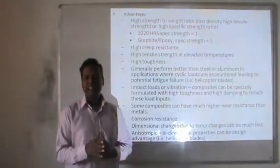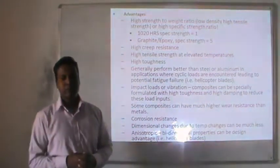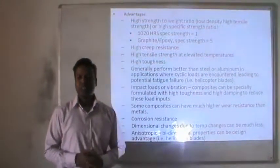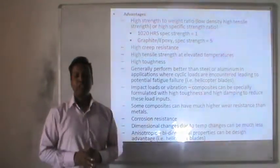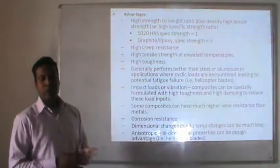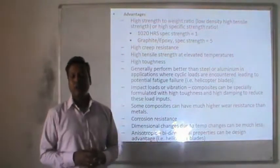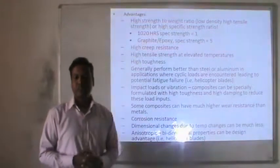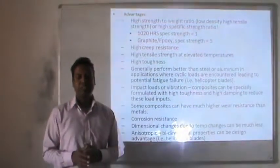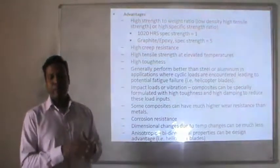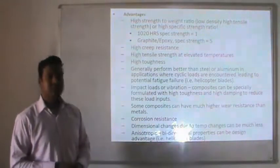Composites generally perform better than steel or aluminum in applications where cyclic loads are encountered, leading to potential fatigue failures. For example, in helicopter blades subjected to impact loads and vibrations, composites can be specially designed with high toughness and high damping to reduce load inputs. Some composites also have much higher corrosion resistance than metals. Dimensional change due to temperature change can be less, and anisotropic bi-directional properties can be designed as an advantage.